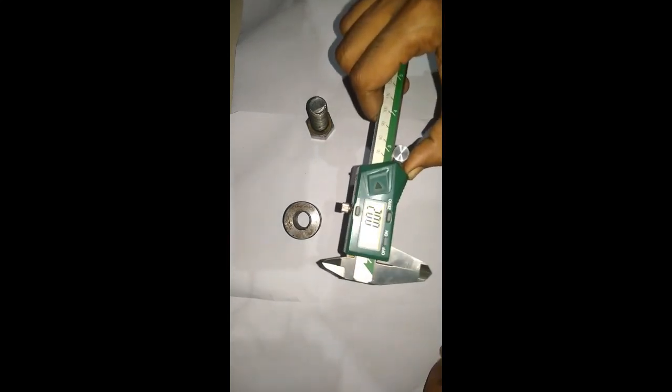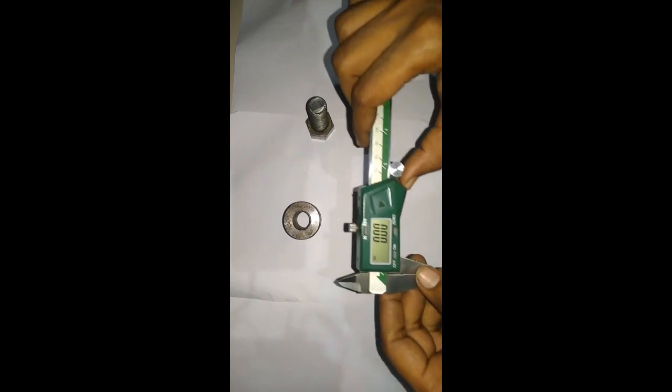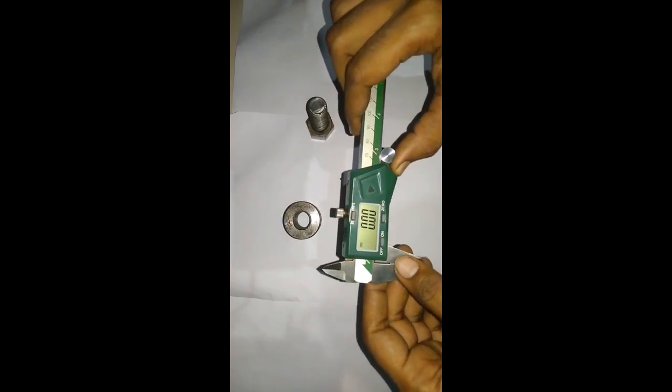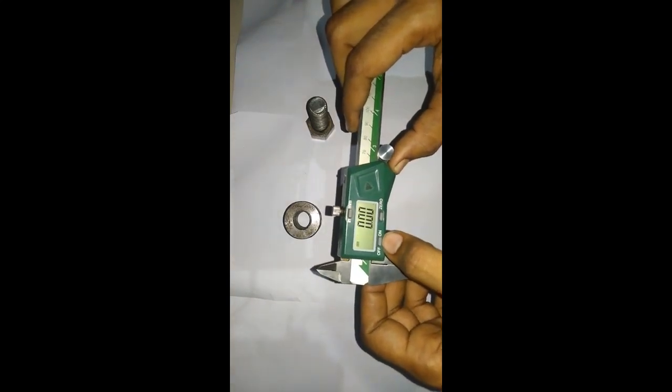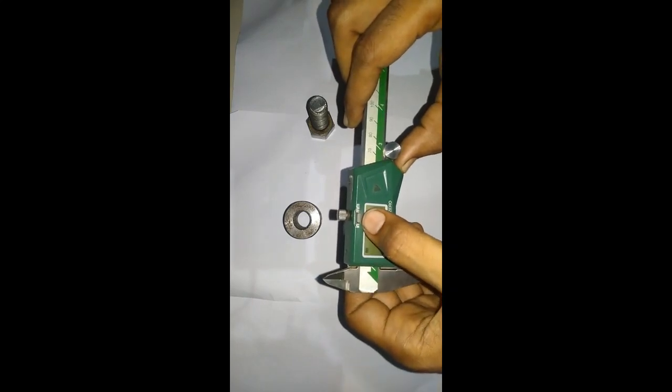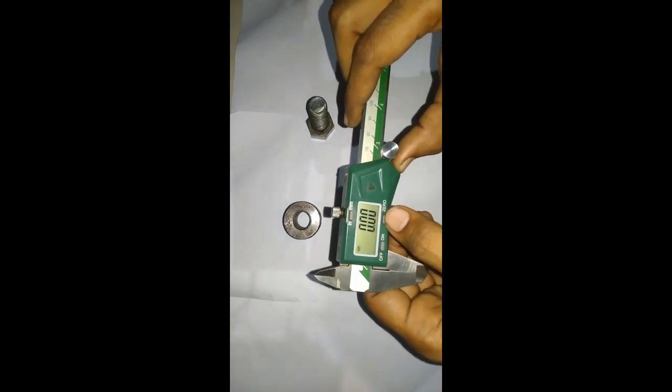It is the Digital Vernier. First, we will see the Constructural Details of these instruments. This one is the On-Off Switch. This one is the Unit Convergence Switch. This one is the Zero Setter Switch.